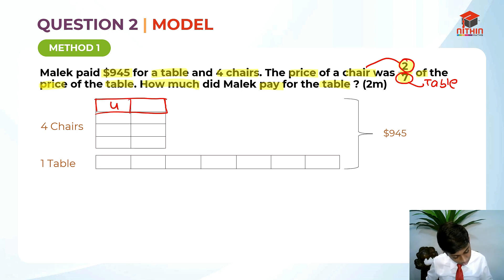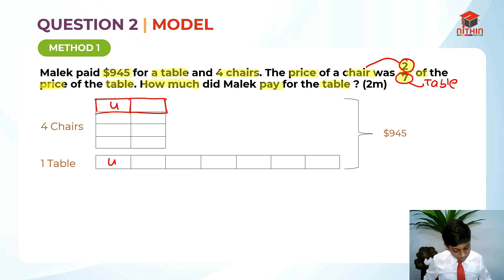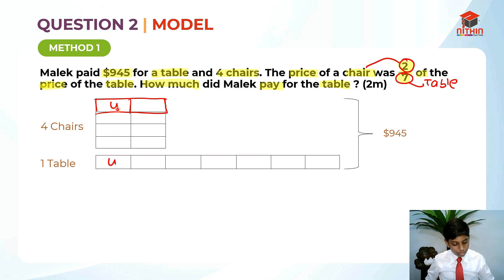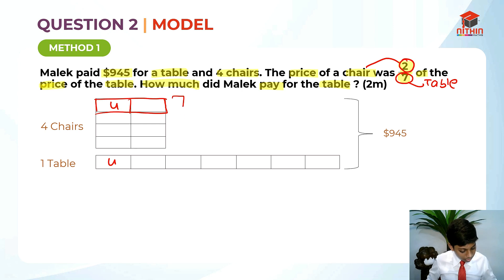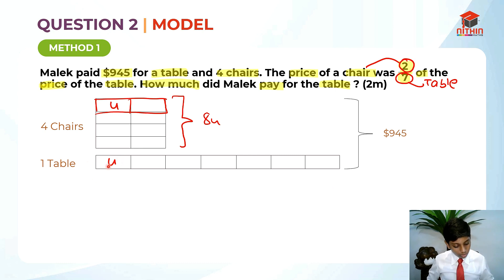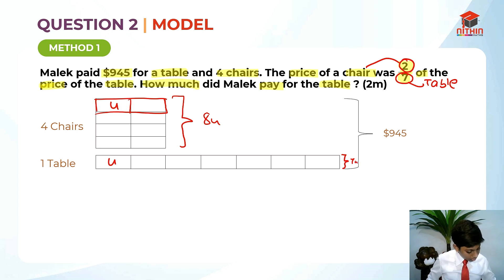So this is 1 unit for 1 chair. The table is 7 units — all of these are 7 units in total. And all of the chairs counted in total is 8 units: 1, 2, 3, 4, 5, 6, 7, 8 units. So all of this is 8 units. The table is also 7 units — let's check: 1, 2, 3, 4, 5, 6, 7. Yes, the table is 7 units.